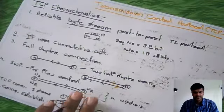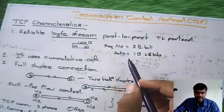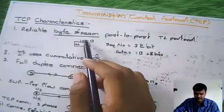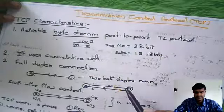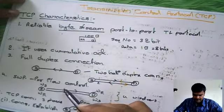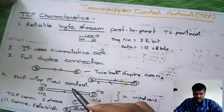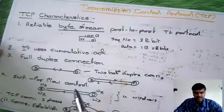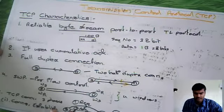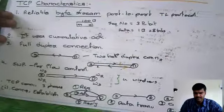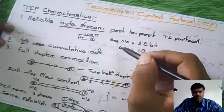So these are the major characteristics of TCP. The first one is byte stream — for each byte we use one sequence number, that is why we call it byte stream. It uses cumulative acknowledgement. It is a full duplex connection but internally it is two half duplex connections. It is a transport layer protocol, so it has the responsibility of flow control and uses the sliding window protocol. And for the connection, we have three phases: connection establishment, data transmission, and connection termination. Hope you got the characteristics of the Transmission Control Protocol. Thank you.